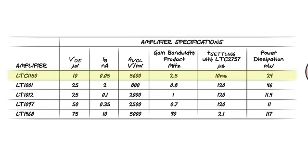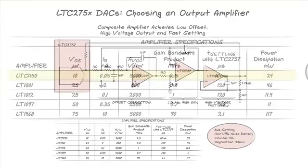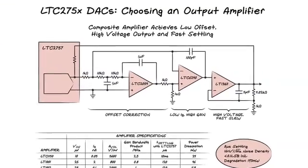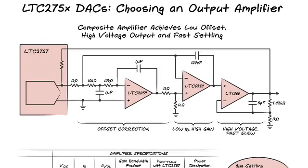The LTC1150 is a high voltage auto zero amplifier that will give great accuracy over all output ranges. And finally, here's a composite amplifier that achieves the best of three worlds: chopper accuracy, fast settling, and high voltage. This is the circuit that is included on the demo board.